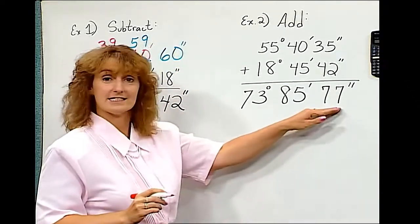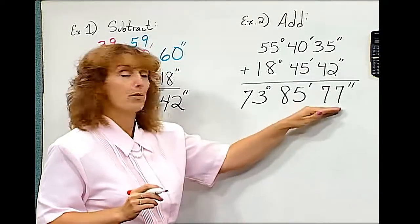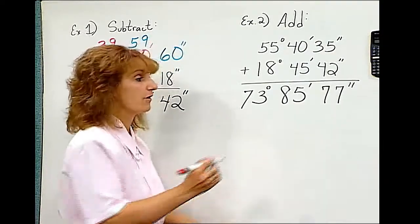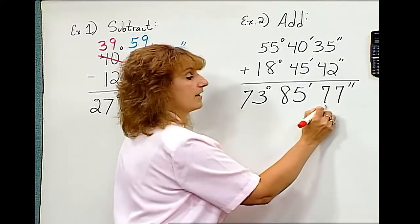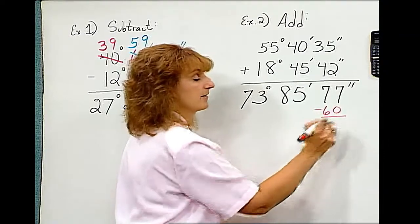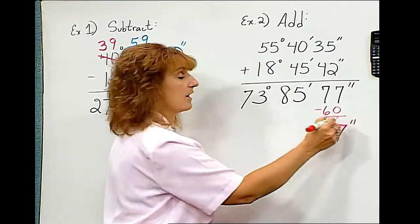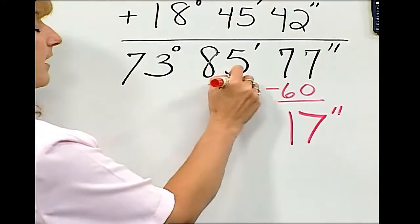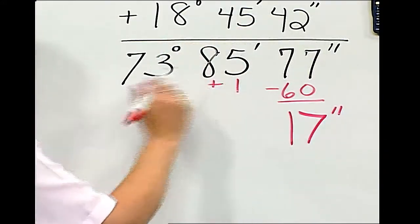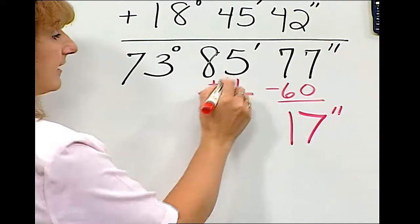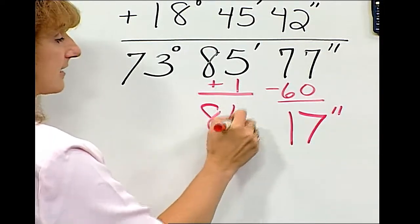There are 60 seconds in a minute. We have over a minute. So if I take away that one minute, I'm left with 17 seconds. But I'm going to add that one minute on here. I'm going to bring it back. That gives me 86 minutes.